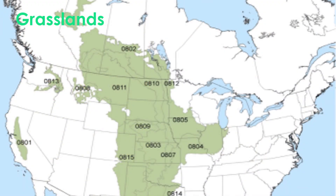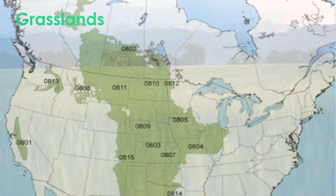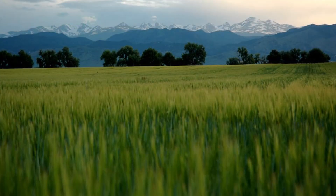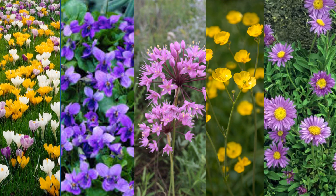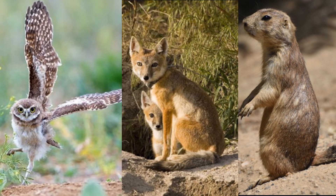Grasslands, also known as the prairies, are ideal for agriculture. Alberta, Saskatchewan, southern Manitoba, and the US Southwest are covered in grassland. This area is beautiful, flat, and perfect for growing grains like wheat, oats, and rye. You can also find beautiful wildflowers including crocuses, violets, prairie onions, buttercups, and asters. Notable prairie wildlife include the black-tailed prairie dog, swift fox, and burrowing owl.